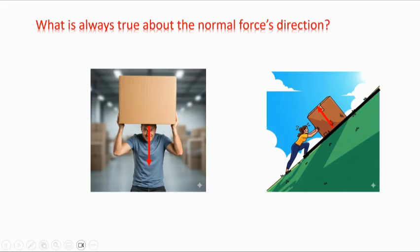So you can see that in both of these cases, the normal force is perpendicular to the surface that is causing the normal force. Whereas the box is pushing down on the man, the force that the man feels is perpendicular to the surface of the box. The hill is pushing up on the box, pushing up and to the left to prevent the box from sinking in. That normal force is perpendicular to the surface of the hill.